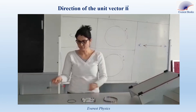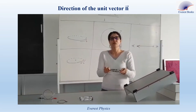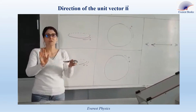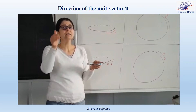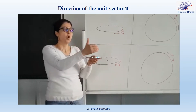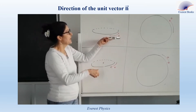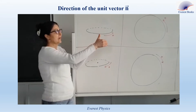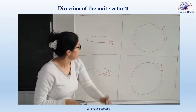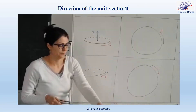Now let's move to our experiment. Here we have conducting loops. We want to specify the direction of the unit vector N. First, I will place the loop in the horizontal plane. Using your right hand, curl your fingers with the chosen positive sense, and your thumb will point in the direction of N. In the first figure, the chosen positive sense gives a thumb pointing vertically upward, so the unit vector N is drawn from the center of the loop pointing upward.